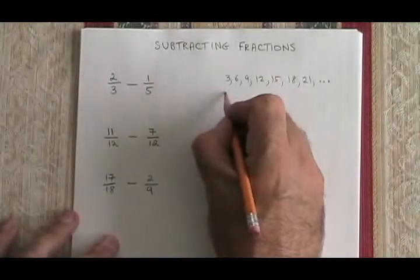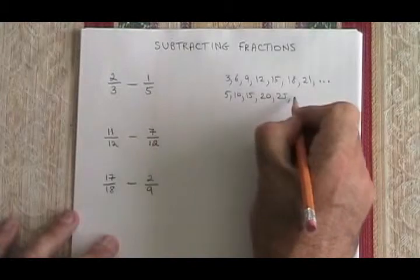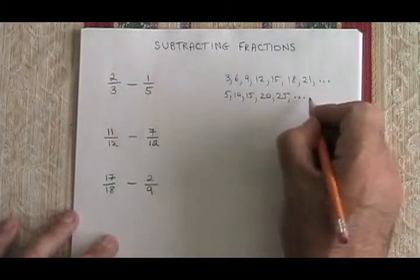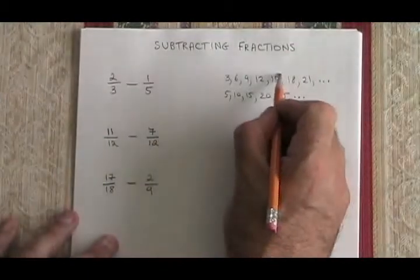Multiples of 5 are 5, 10, 15, 20, 25, and it keeps going. I look for the lowest number that's in both lists, which in this case is the 15.